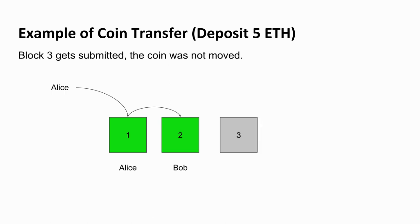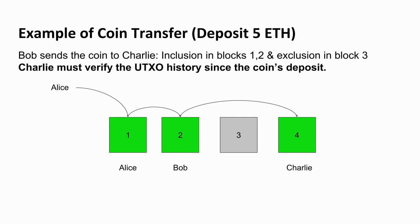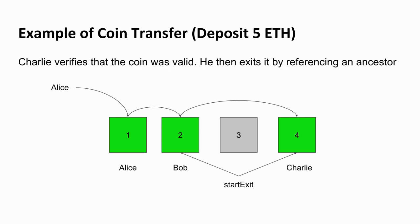At block three, let's say some other Charlie's coins move, but we don't care about it. At block four, maybe Bob sends the coin to Charlie, and so Charlie must verify the UTXO history for blocks one and two, but also verify there was no transaction in block three — because if there was, that would have been a double spend, and if Charlie's an honest party, he wants to reject any double-spend coins. We'll see how Charlie may want to accept the coin if he's trying to cheat, but also how that can be countered. Whenever Charlie wants to exit, he says 'I got it at block four and at block two' and waits seven days to finalize the exit.